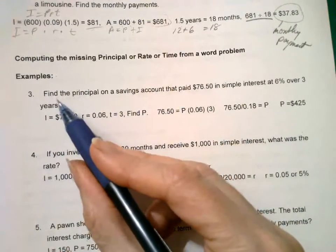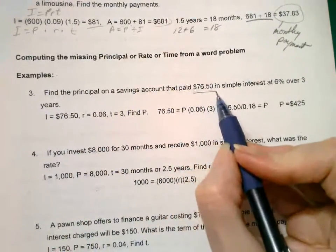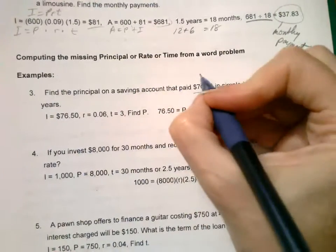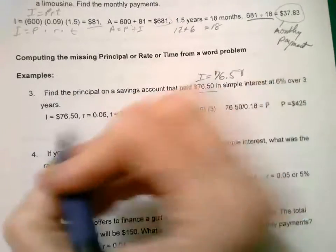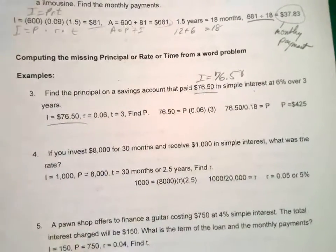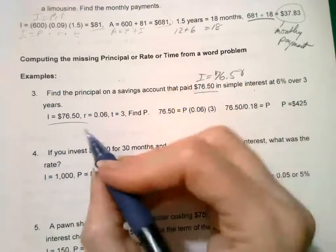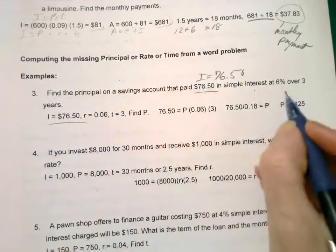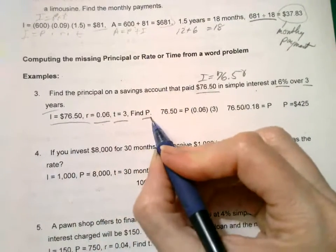Find the principal on a savings account that paid this much in simple interest. That's my alarm. I have another class coming soon. Let me finish this. Interest, your rate is 6%, your time is over three years. Find P.